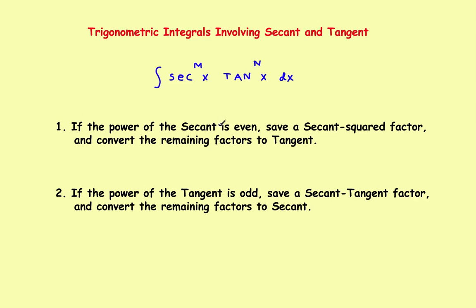If the power of the secant is even — in other words if the secant is raised to an even power — then what you do is save a secant squared factor and convert the remaining factors to tangent. We'll do an example to show why you would want to do this.